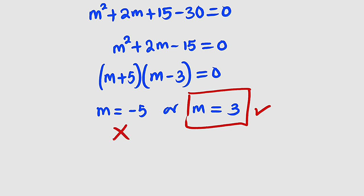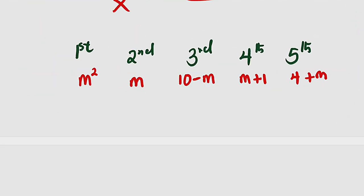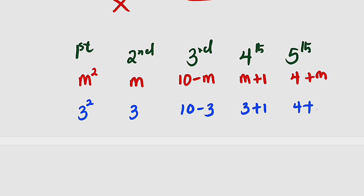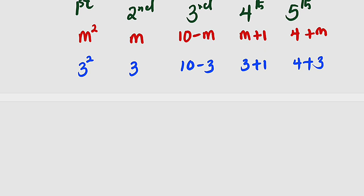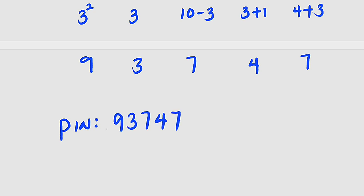Substituting m equals 3 back into each digit: first digit is 3 squared equals 9; second digit is 3; third digit is 10 minus 3 equals 7; fourth digit is 3 plus 1 equals 4; fifth digit is 4 plus 3 equals 7. Therefore the five-digit PIN is 9, 3, 7, 4, 7.